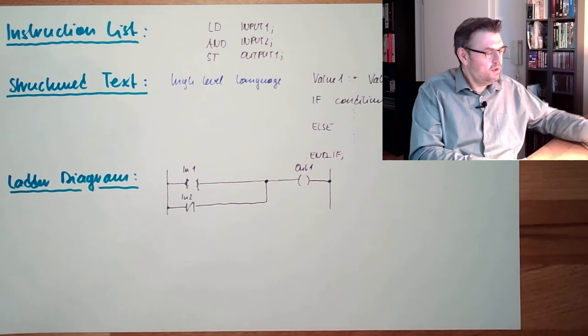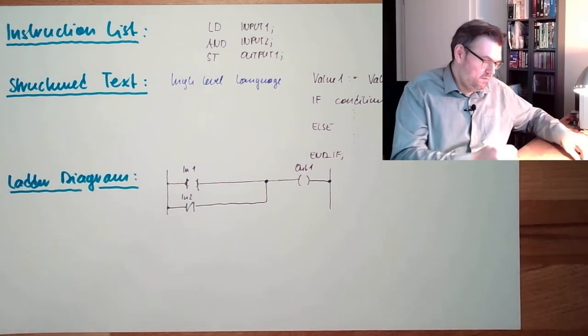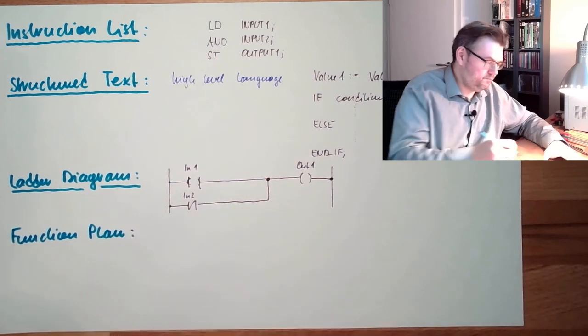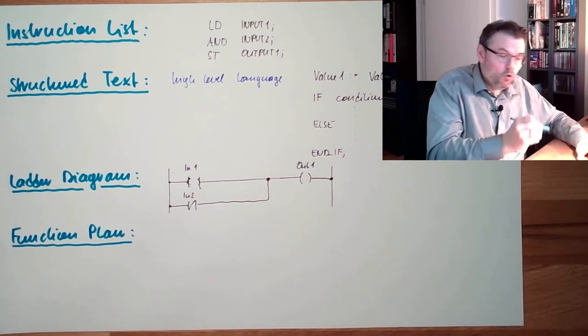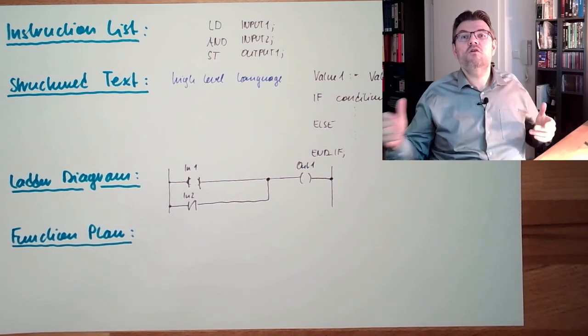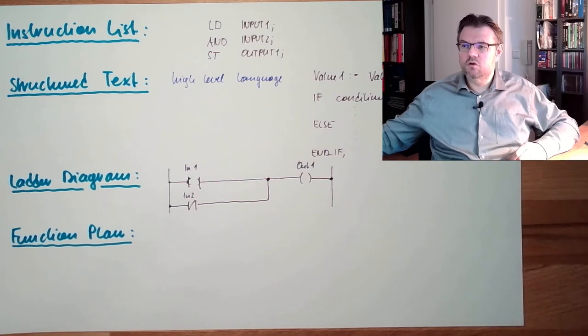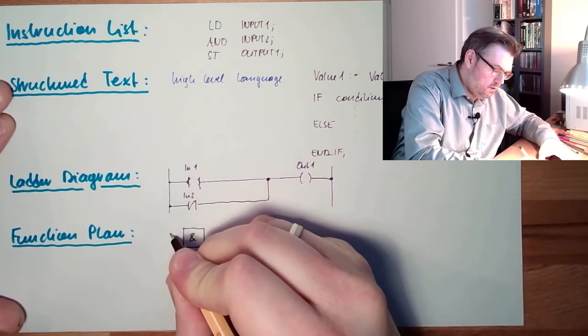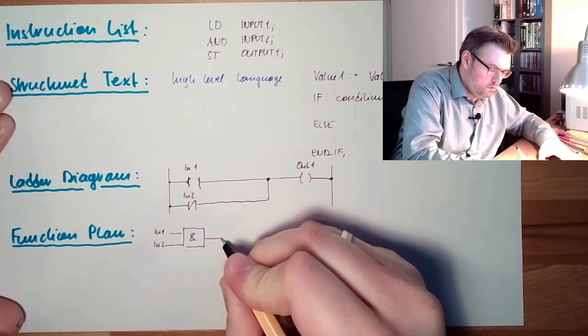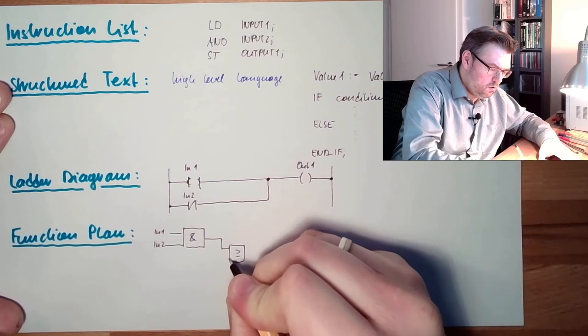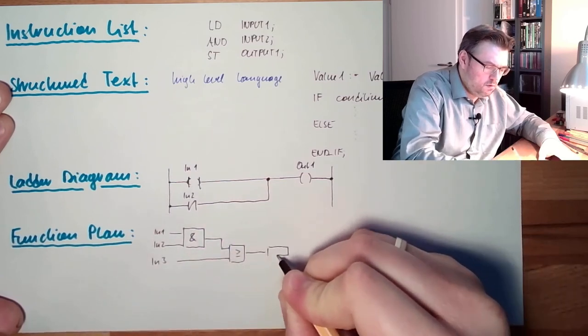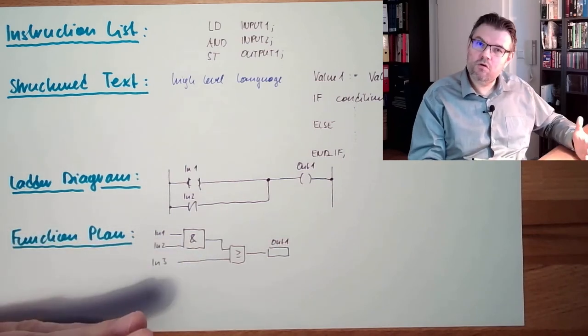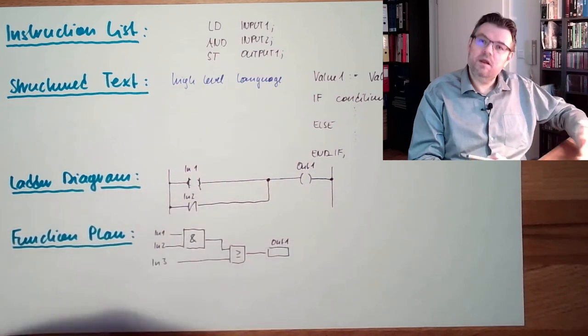Okay, Ladder Diagram. Next thing is Function Plan. Function Plan, also graphic, and this pretty much looks like a logic plan like we've used in digital. So it pretty much looks like: AND in one, in two, OR in three, out one. Well, that's it. They are organized in so-called networks and each network has some logic and they executed one network after the other.